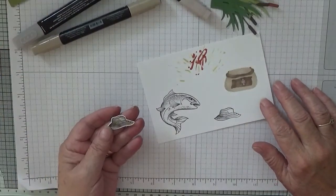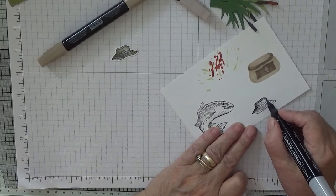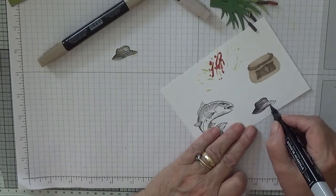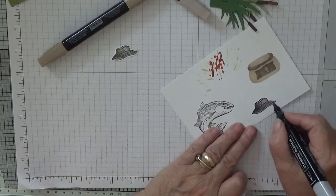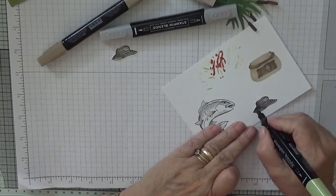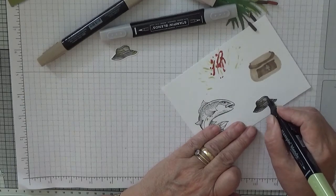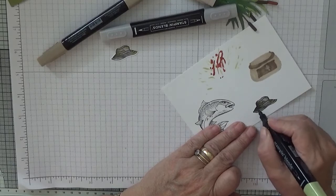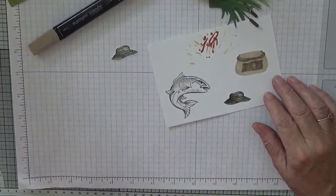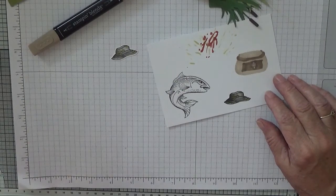The hat I colored in smoky slate. And then I used a bit of Old Olive on the darker bit. Right, so that's that. Now for the fish.